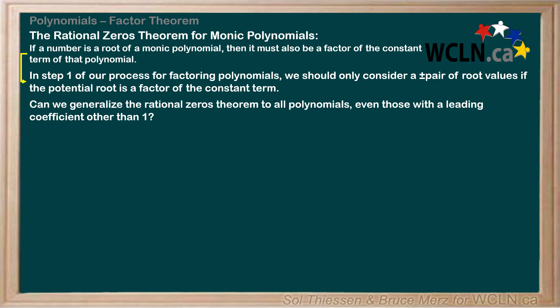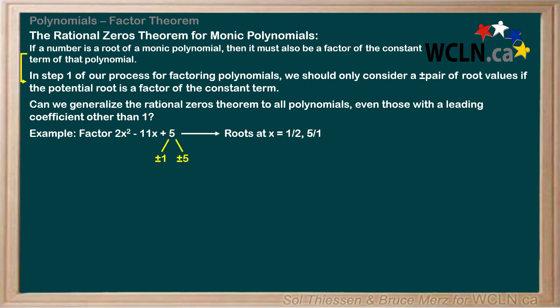As you may have guessed, the answer is yes. Recall the example from the first video of this section, where we factored 2x squared minus 11x plus 5 to find its roots. We found the roots at x equals 1 over 2 and 5, or 5 over 1. From what we already know about the rational zeros theorem, we would have picked the potential roots as plus or minus 1 and plus or minus 5, as those are the only factors of 5, the constant term. So where does the root at x equals 1 half come from?